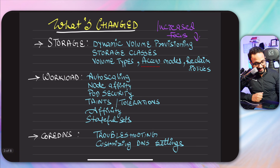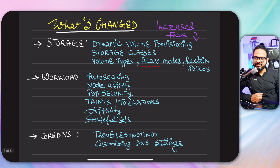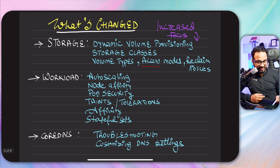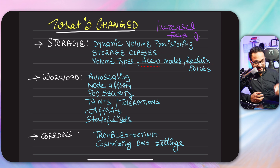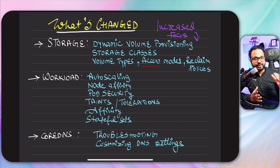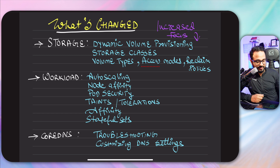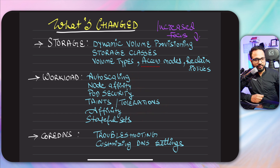They have increased the focus on topics in different sections. In storage, they have added dynamic volume provisioning, storage classes, volume types, access modes, reclaim policy, and so on. These are topics where they have increased the focus — some may be newly added, but mostly it's an increased focus. Other topics with increased focus include auto scaling, affinity groups, node affinity, pod security, and taints and tolerations.